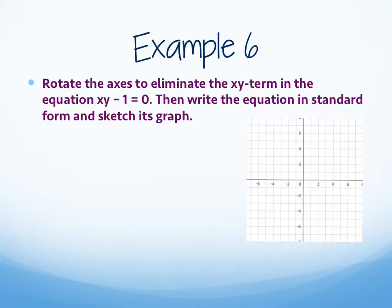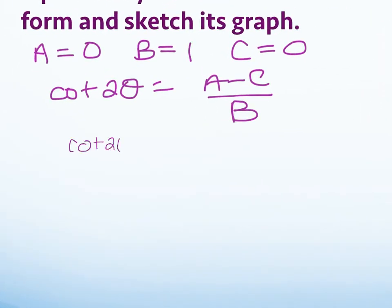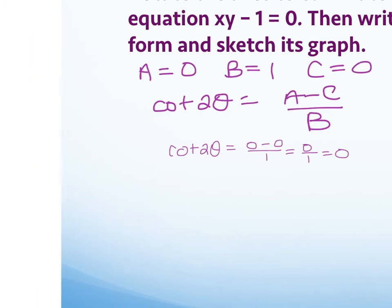Rotate the axes to eliminate the XY term in the equation xy minus 1 equals 0, then write in standard form and sketch the graph. Step one — identify A, B, and C. There is no x squared term so A is 0; B is 1 (in front of the XY term); and there is no y squared term so C is 0.